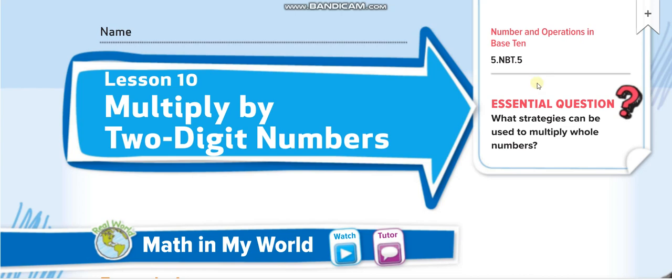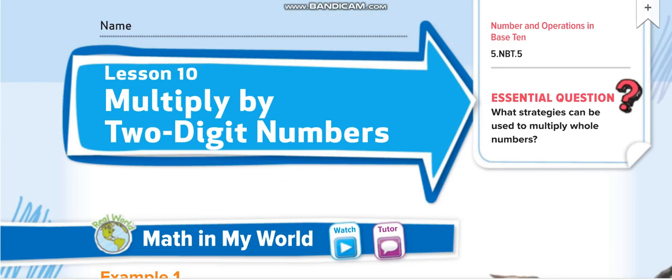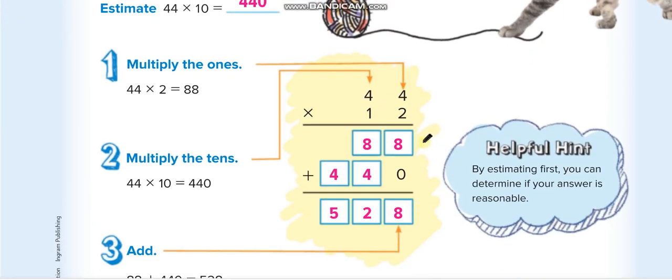Hey everyone, welcome back to my channel Learn Math with Mr. Saad. Today's lesson for grade 5 chapter 2 lesson 10 is multiply by 2-digit numbers, page number 137. By the name of the lesson it's clear that today we are going to multiply by two-digit numbers. One-digit number was the last lesson.